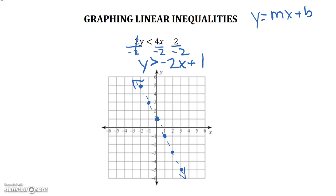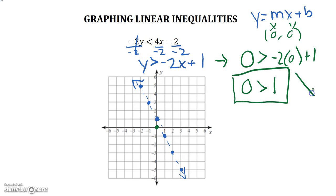Now our last step is to shade. So let's plug in my favorite point to test, 0, 0, and see if it becomes a solution. Plugging that point in, we have 0 is greater than negative 2 times 0 plus 1. So 0 is greater than 1. This is a false statement. 0 is not greater than 1, therefore this 0, 0 point is not part of our solutions. So we're shading a portion of the graph that does not contain our 0, 0.